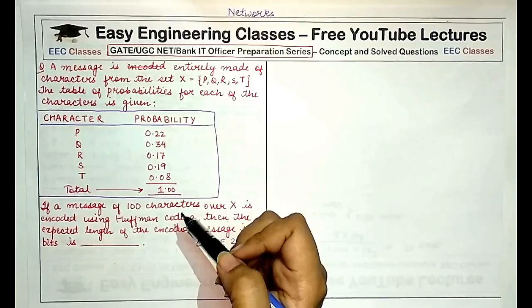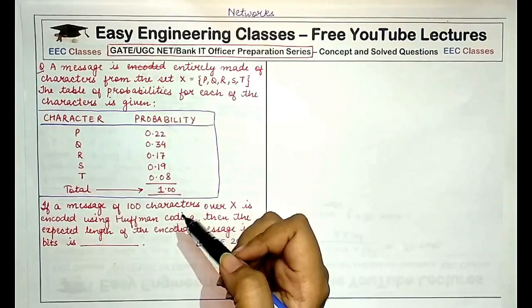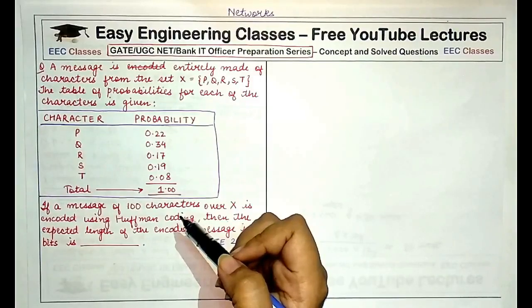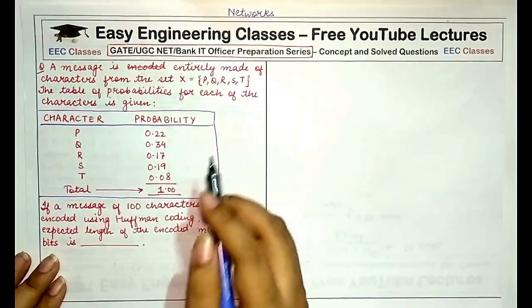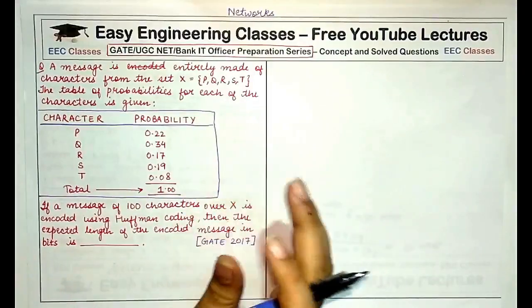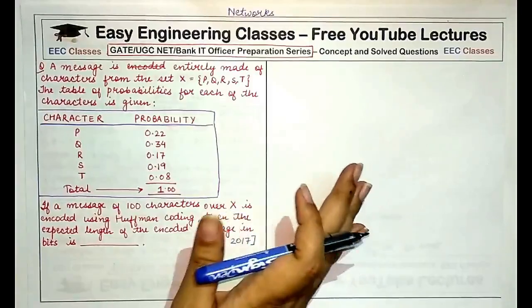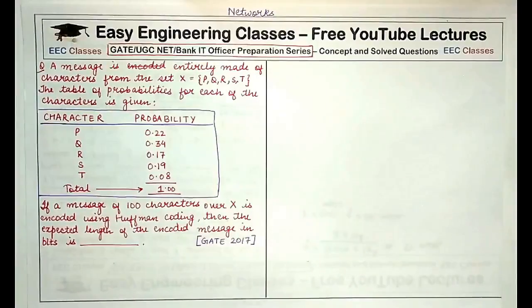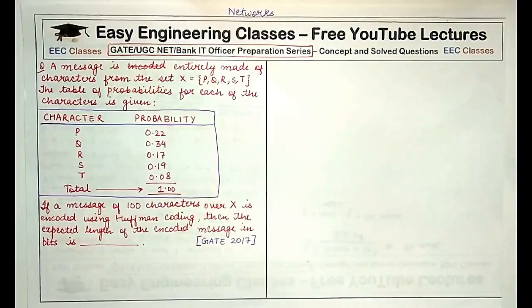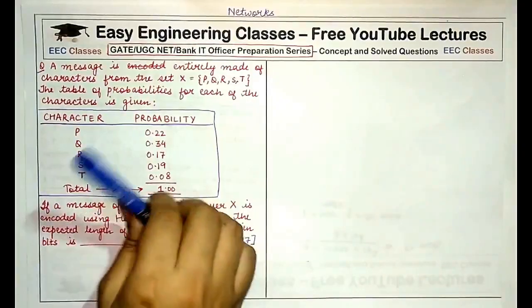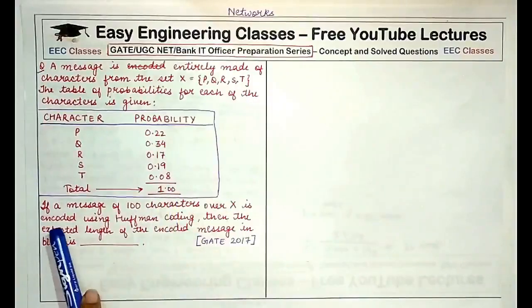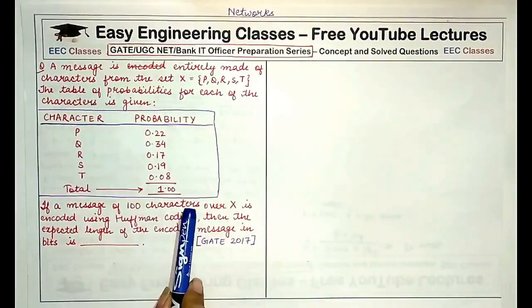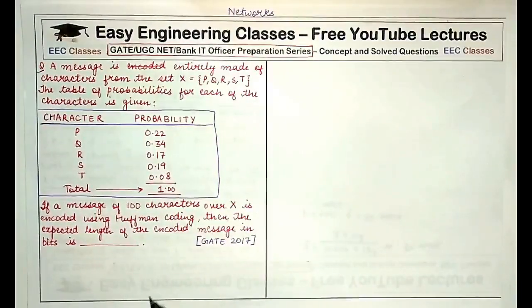Then we multiply the length of the code that has been assigned to different characters with their respective probabilities to get an average length of a code per character. All this would become very clear when I solve this question. Initially, the characters that are to be encoded are P, Q, R, S, T. Their probabilities are given and a message of 100 characters is to be sent.